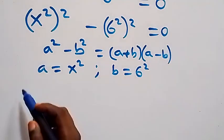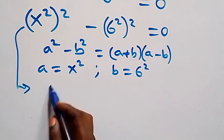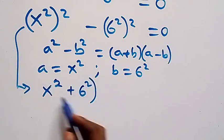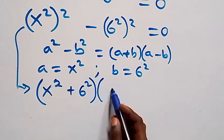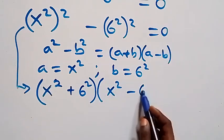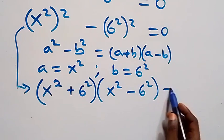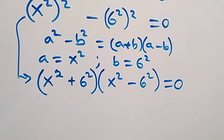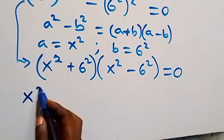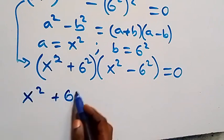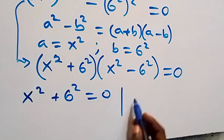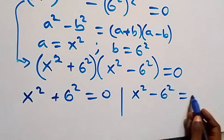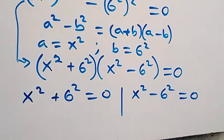Applying this, it becomes (x squared plus 6 squared) times (x squared minus 6 squared) equals 0. From here we have two possible cases: x squared plus 6 squared equals 0, or x squared minus 6 squared equals 0.